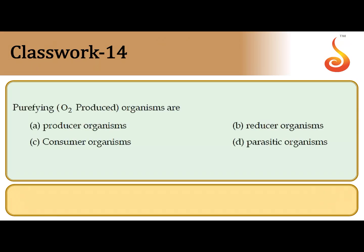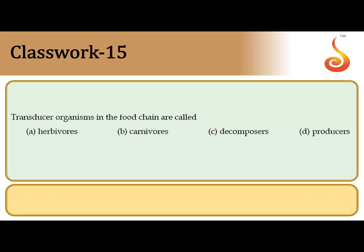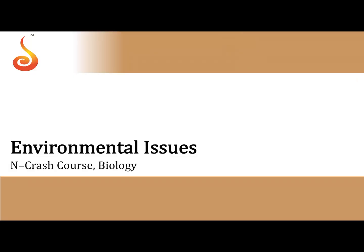The 14th question: purifying organisms are those which take in carbon dioxide and give out oxygen — the green plants belonging to the producer trophic level. Transducers are also producers, because they convert radiant energy from the sun into chemical energy in the form of organic matter, converting one form of energy into another. So transducer organisms in the food chain are producers. The correct answer is the last option. Now moving on to practice questions from environmental issues.